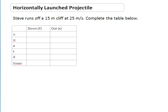Hey guys, Mr. Post here, and we're going to look at horizontally launched projectile problems. And this is a problem right from our quiz, and it reads, Steve is running off of a 15-meter-high cliff at 25 meters per second. And by saying complete the whole table below, what I'm really saying is